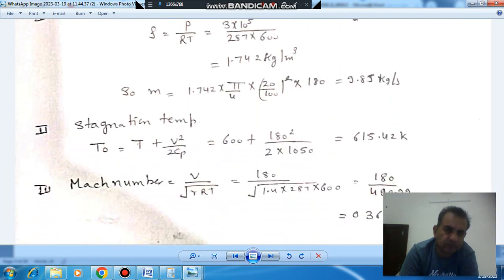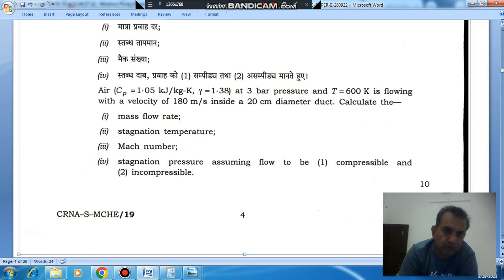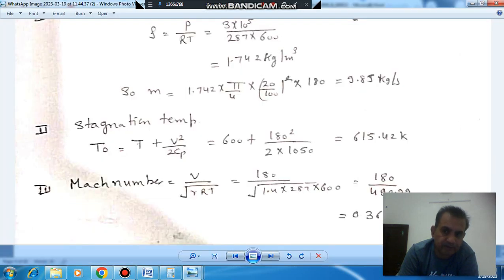Next is stagnation temperature. At stagnation, there will be only thermal energy, so that will be Cp T0. And in the moving fluid, both kinetic energy and thermal energy will be there, so it will be Cp T plus V squared by 2. We can take Cp common, so T0 will be T plus V squared by 2 Cp. So now we have temperature 600 Kelvin, V 180 meters per second, Cp is given as 1050. So the stagnation temperature comes out as 615.42 Kelvin.